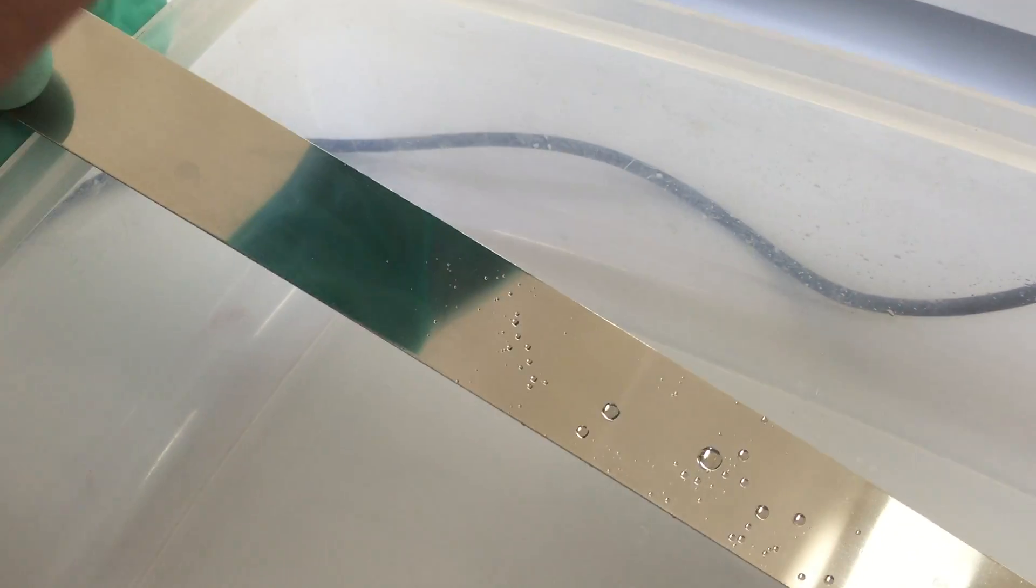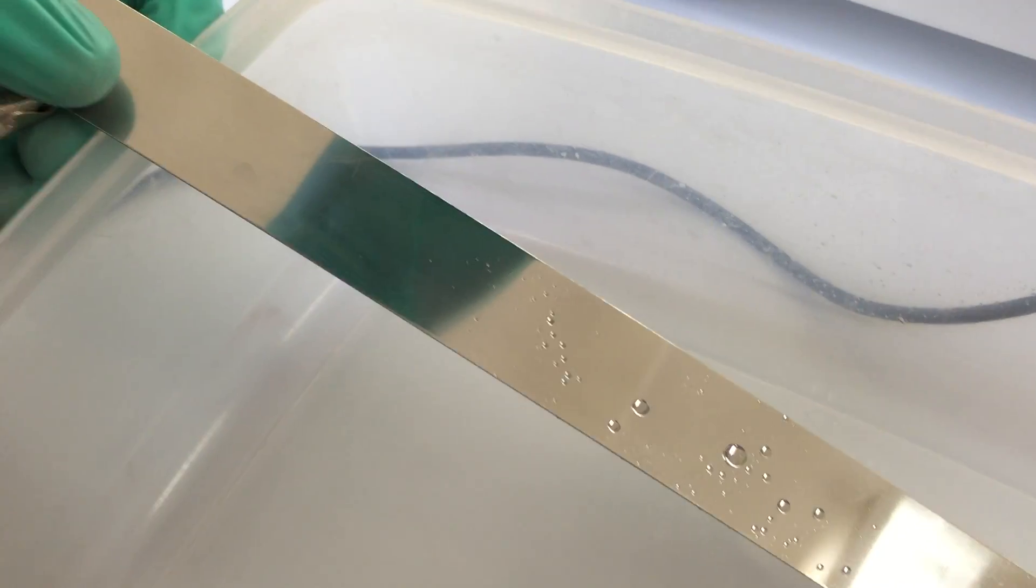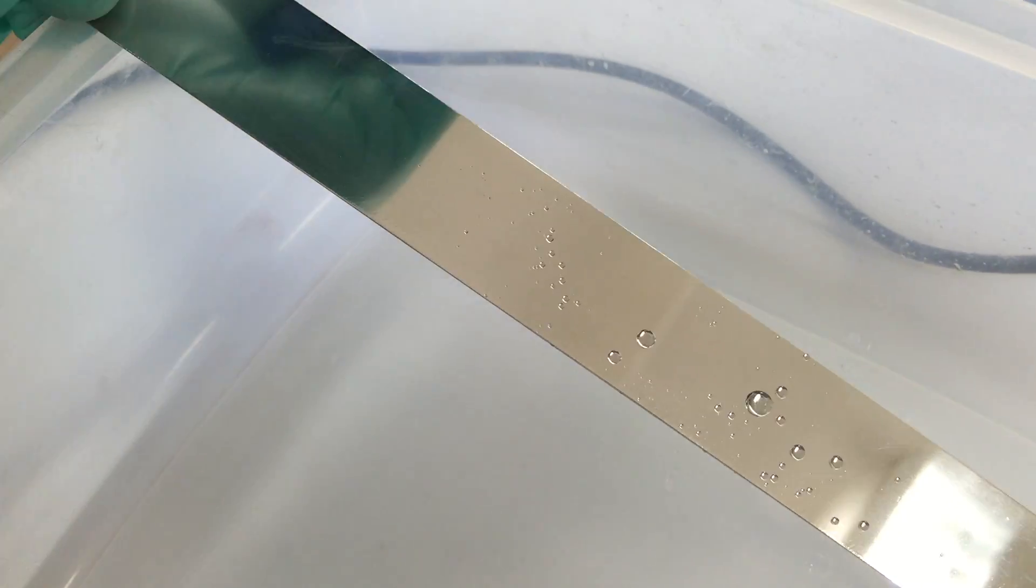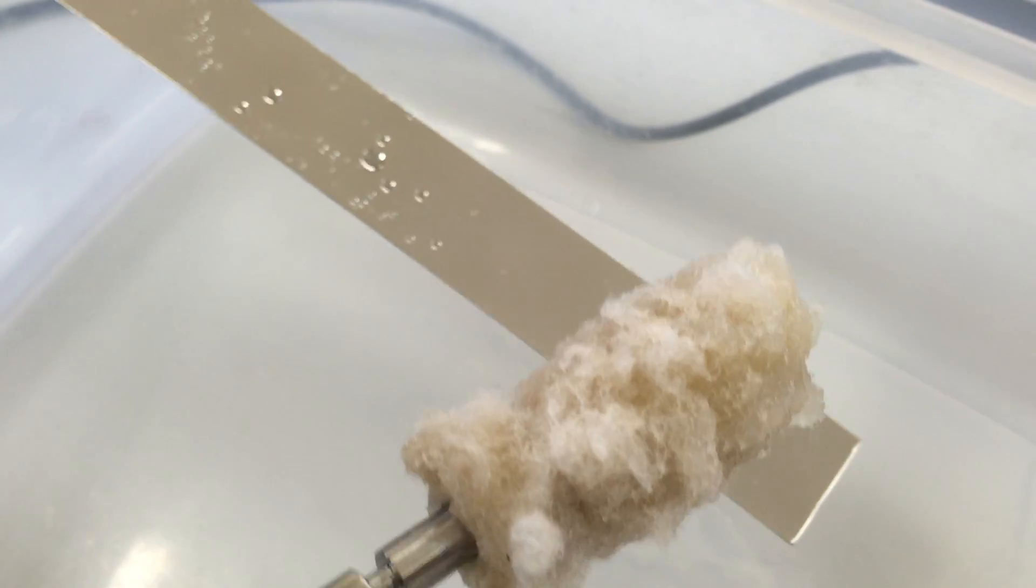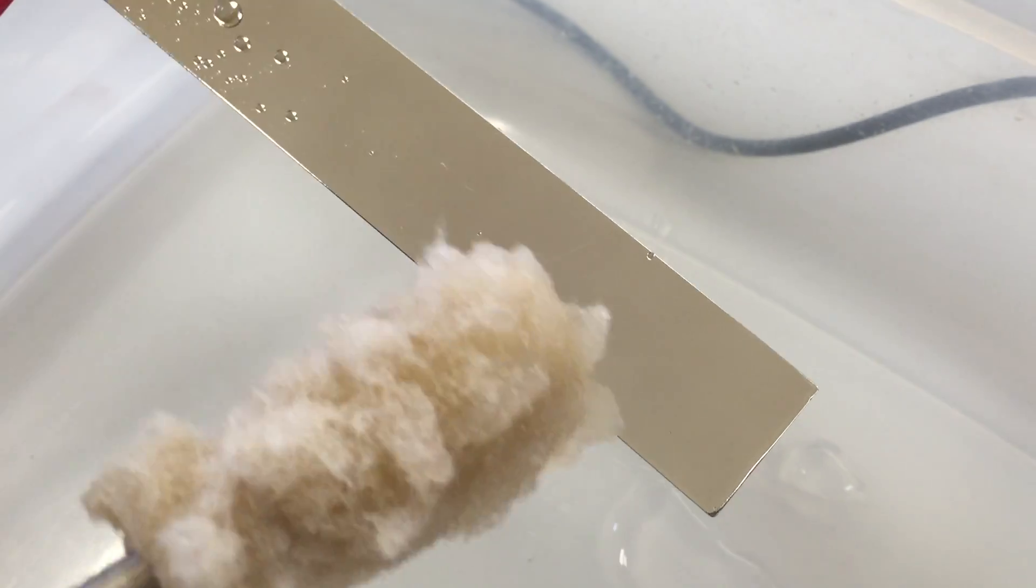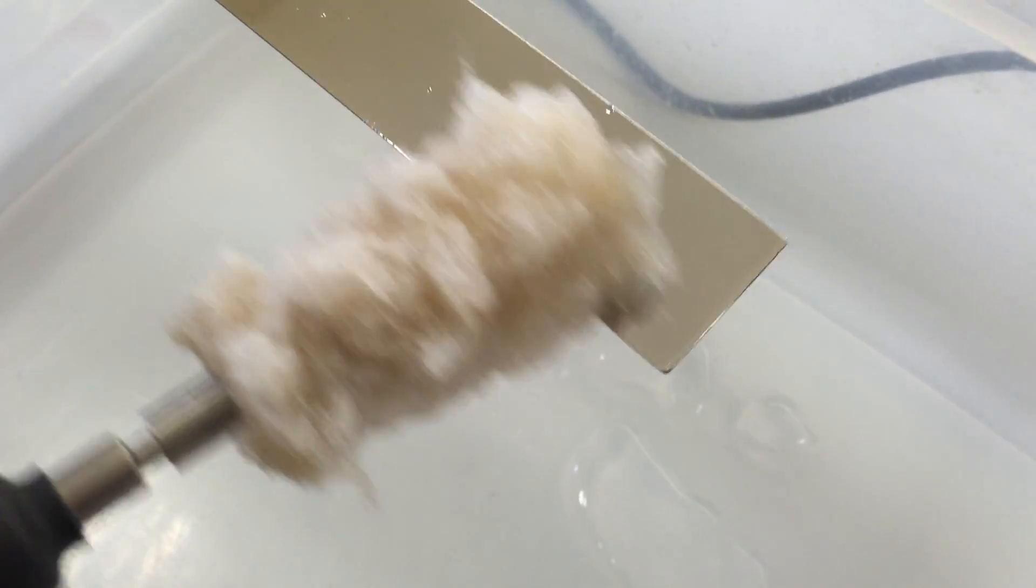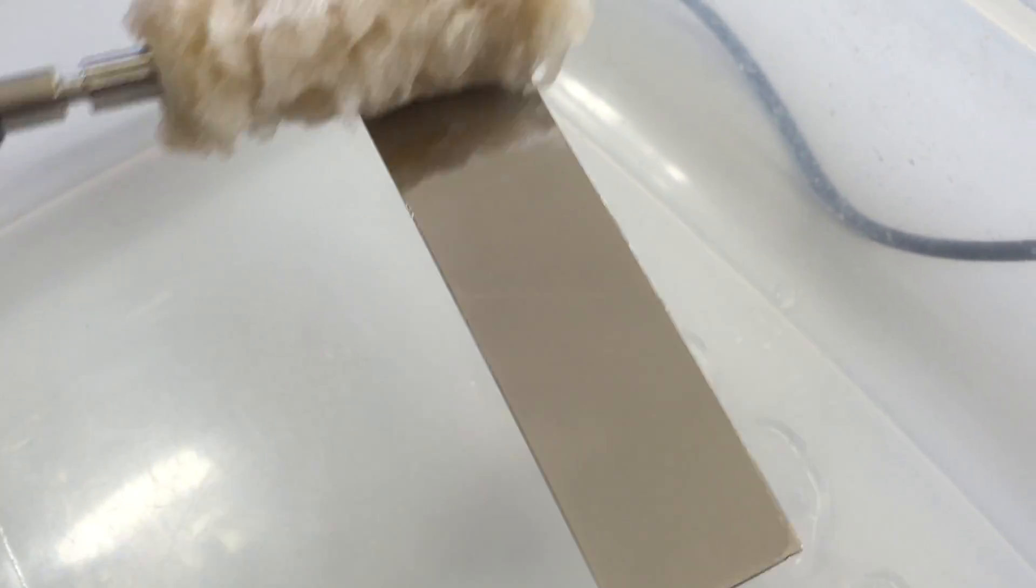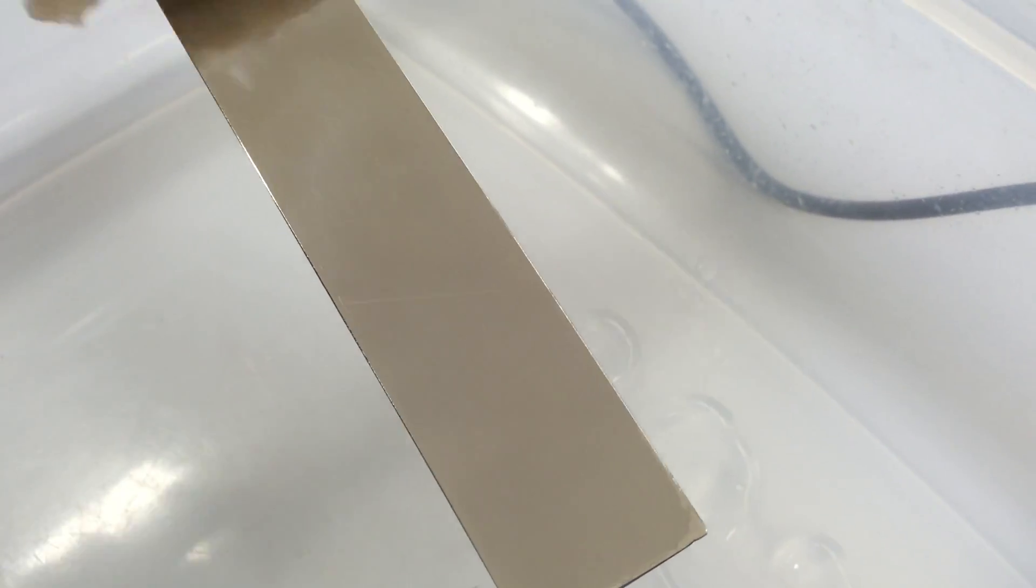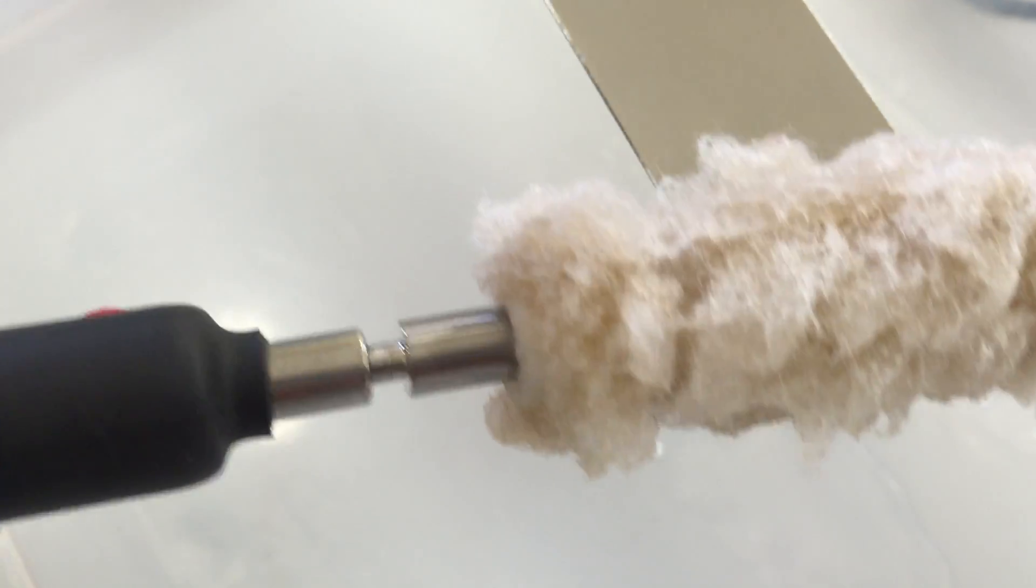You've shown us that the water just runs right off. Yeah, we'll highlight that again. I'm going to go over the wetting out. So we'll start down here. We'll do like a four-inch section. You'll see a voltage drop on the machine, maybe by a volt. That's okay. That means that the current's flowing. That's actually a signal that your sleeve is soaked and that it's working properly.